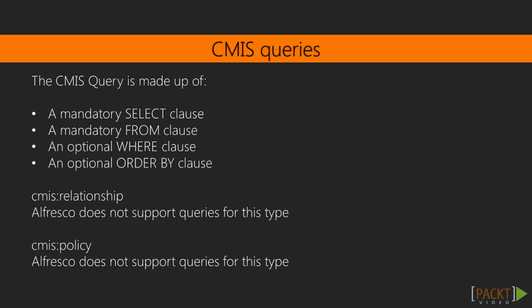The CMIS query is made up of a mandatory select clause, a mandatory from clause, an optional where clause, and an optional order by clause. The CMIS query language does not support group by or having.